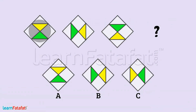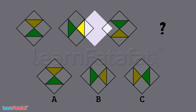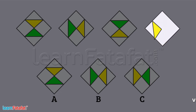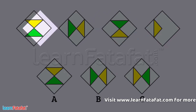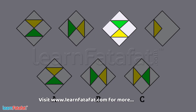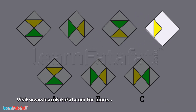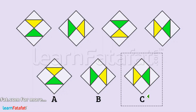Look how the shapes are rotating. Yellow shape is here. It goes here, then here. Next, it should be here. In the same way, green shape is here. It goes here, then here. Next, it should be here. So, C is correct.